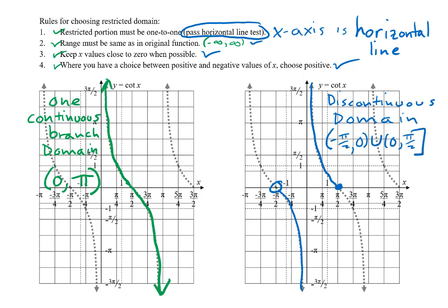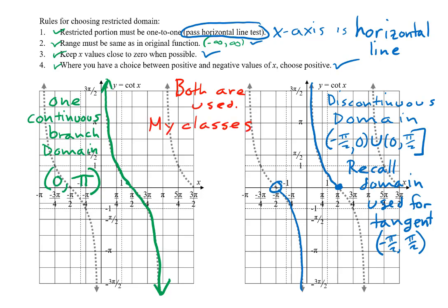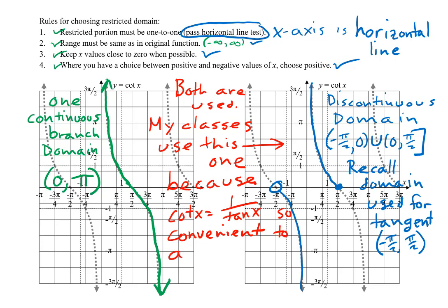Both versions follow the four rules. The green one places a higher priority on rule 4, keeping x values positive. The blue one places a higher priority on rule 3, keeping x values close to zero. The green one looks simpler, using only one smooth continuous curve, but the blue one also has an advantage. We used a restricted domain for tangent of negative pi over 2 to positive pi over 2, which corresponds to the blue curve. Since cotangent is the reciprocal of tangent, it is convenient to have their restricted domains agree.